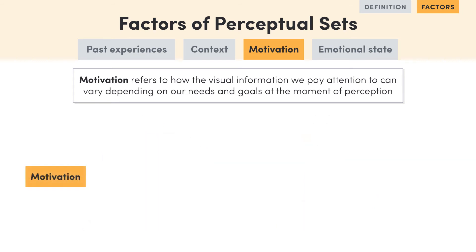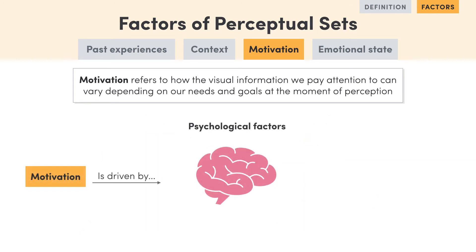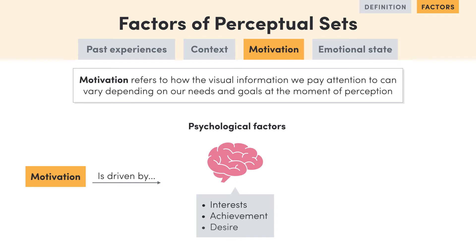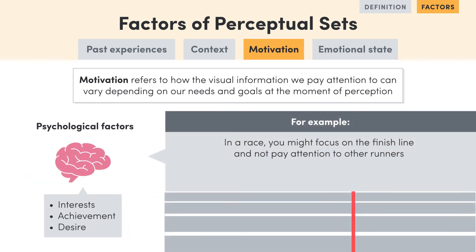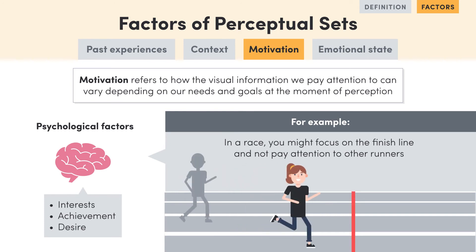Motivation is driven by psychological factors such as interests, achievement and desire, as well as biological factors such as the need for food or rest. An example of a psychological motivator is when you really want to finish running a race, so you might only focus on the finish line rather than paying attention to other runners.